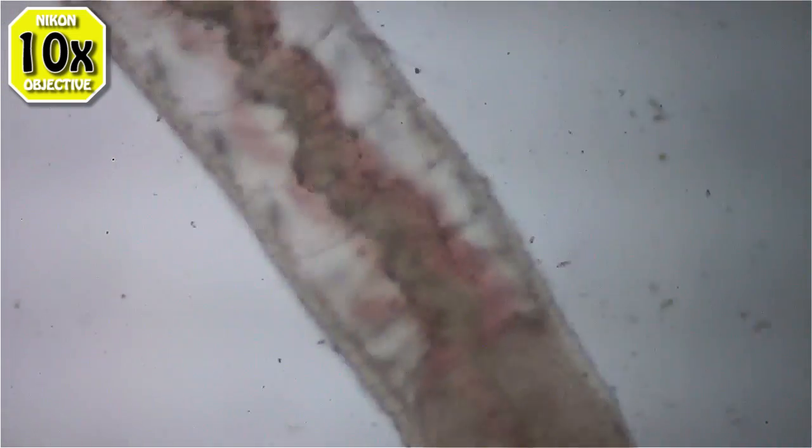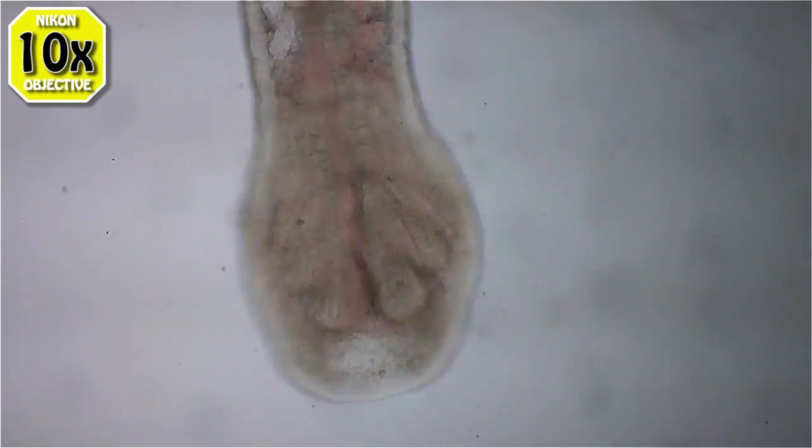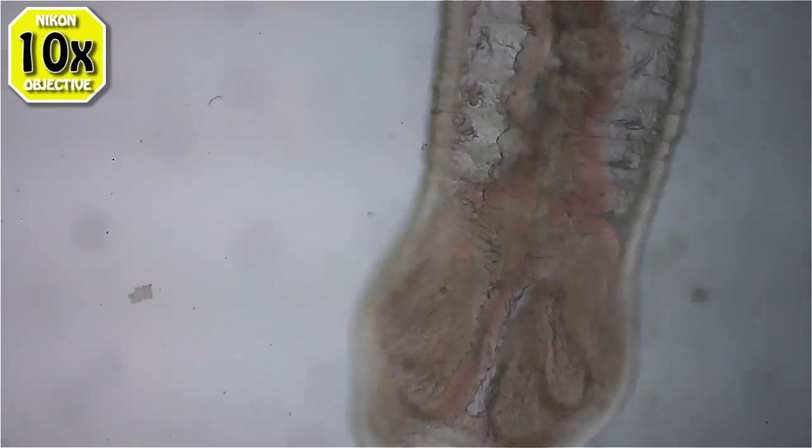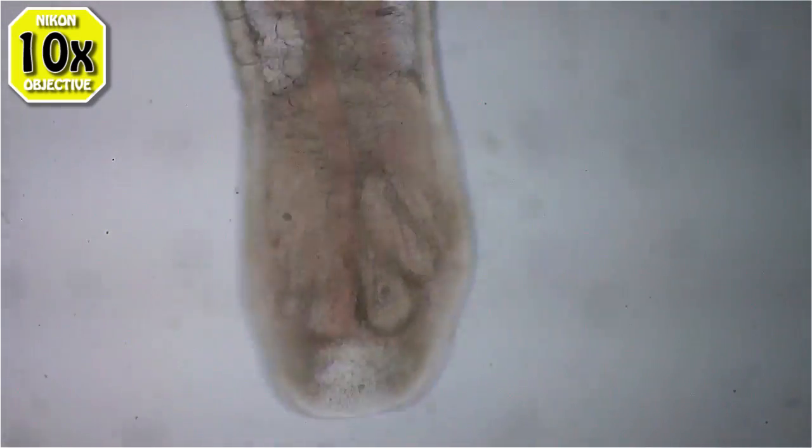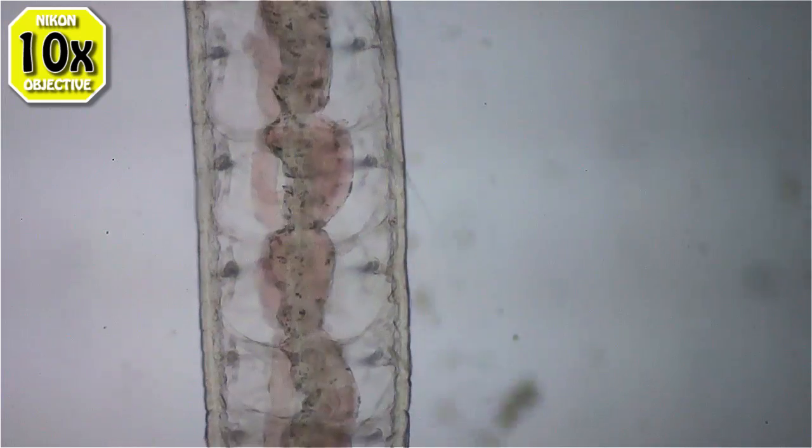And there's his tail end. You can see those finger things inside the skin there, those are gills, and he'll expand them when he needs more oxygen I guess.